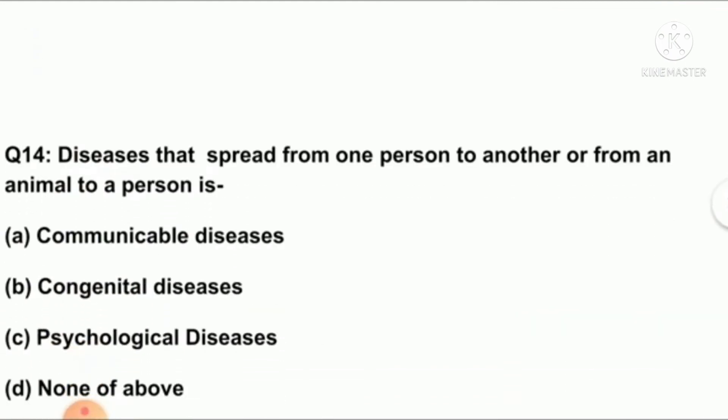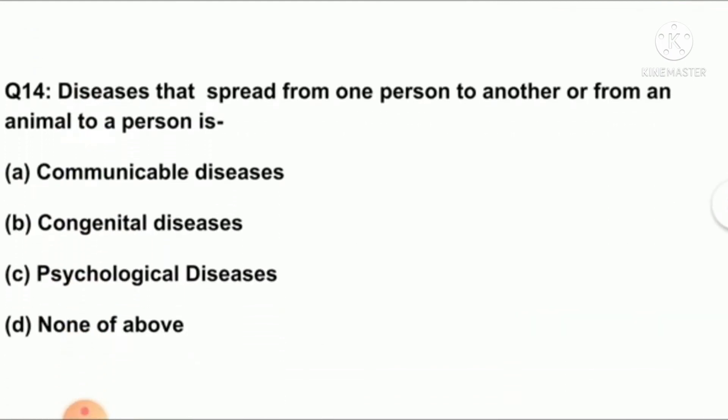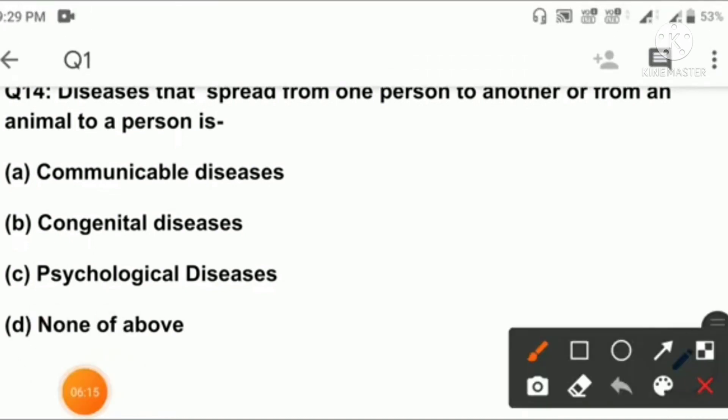Question number fourteen: disease that spreads from one person to another or from an animal to a person is option A: communicable disease, B: congenital disease, C: psychological disease, D: none of above. Right answer is option A: communicable disease.